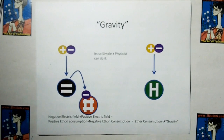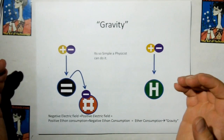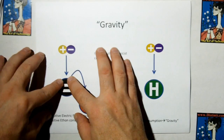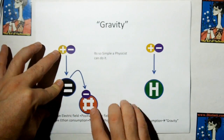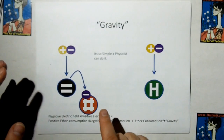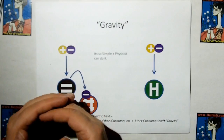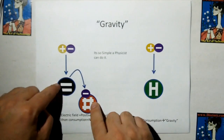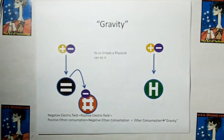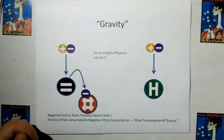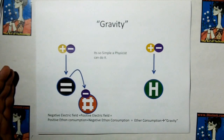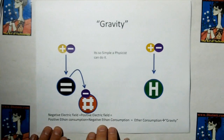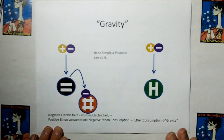So what's gravity? With a proton and electron working together, the electron pulls in the positive and negative pair, sucks up the positive, throws off the negative, and the negative is consumed by the proton. That gives you a net ether flow into a body that has mass. Here's a hydrogen atom — at least a proton and an electron — consuming ether pairs in whole, and that is gravity. Gravity is two halves of the electric field: positive ethon consumption plus negative ethon consumption equals ether consumption, which is the cause of gravity.